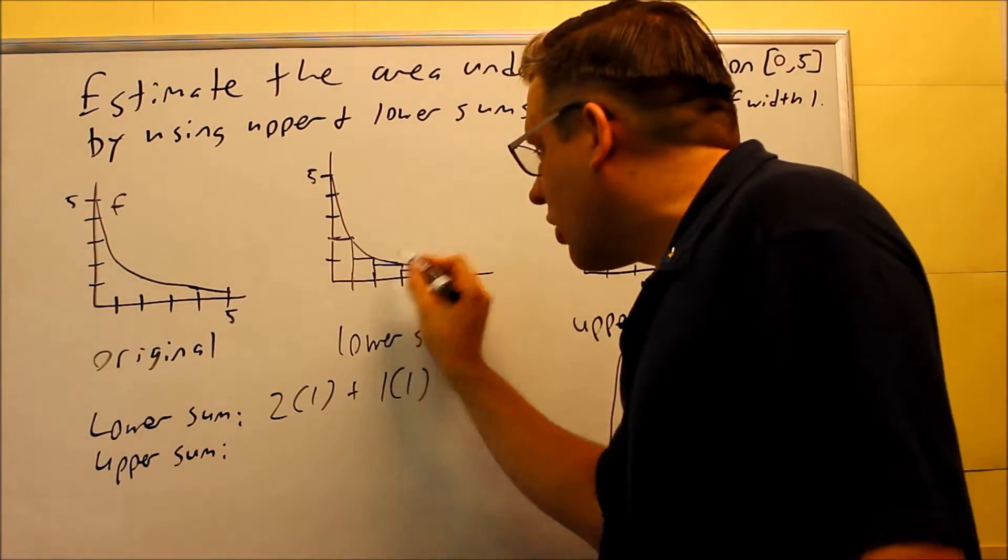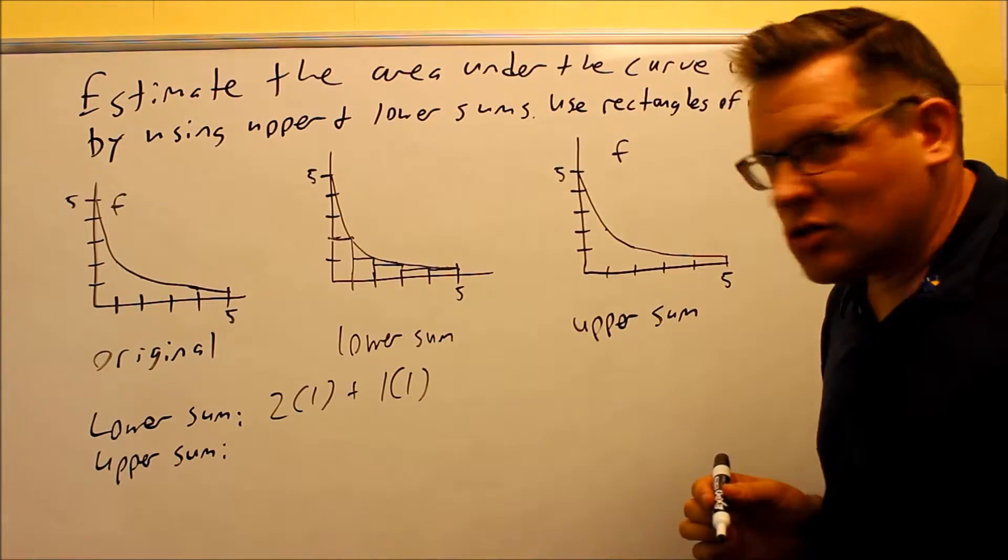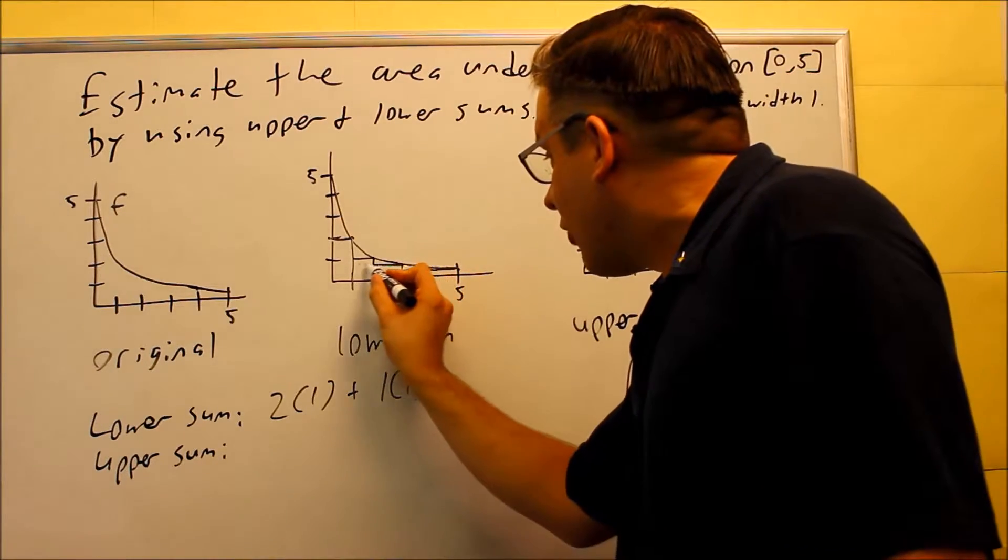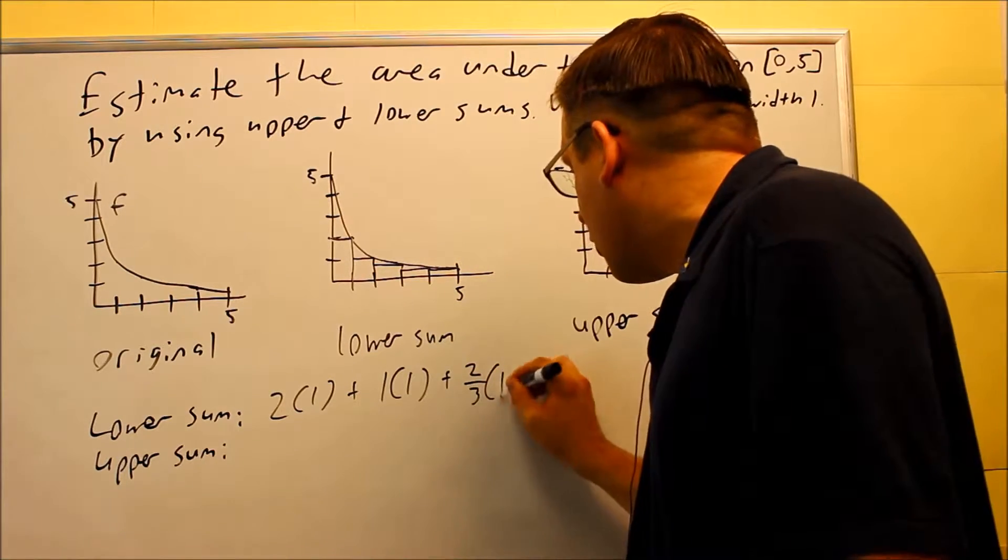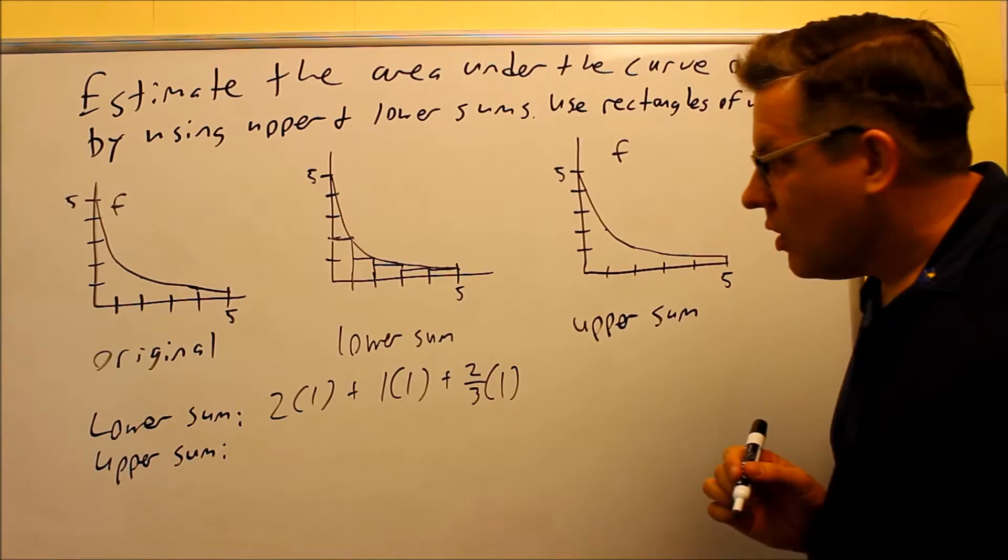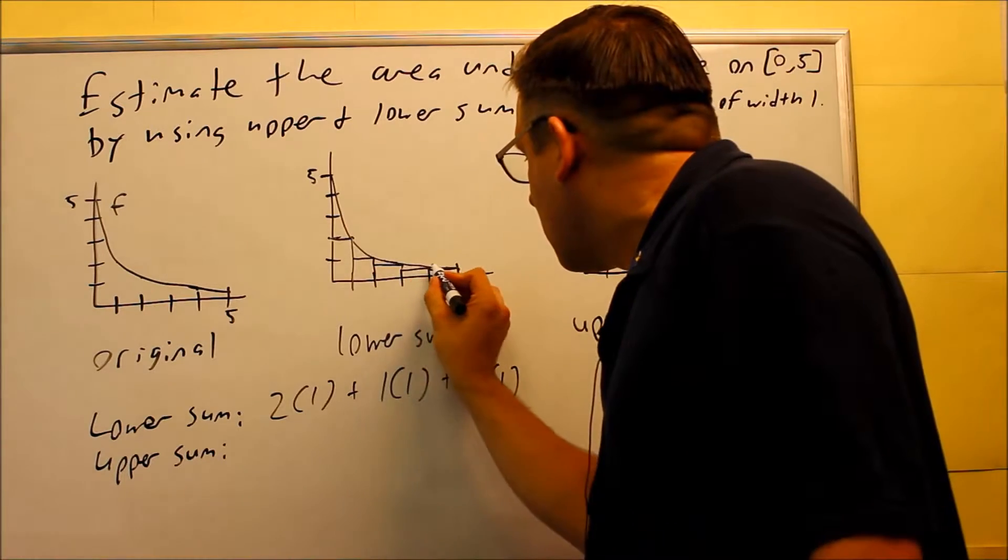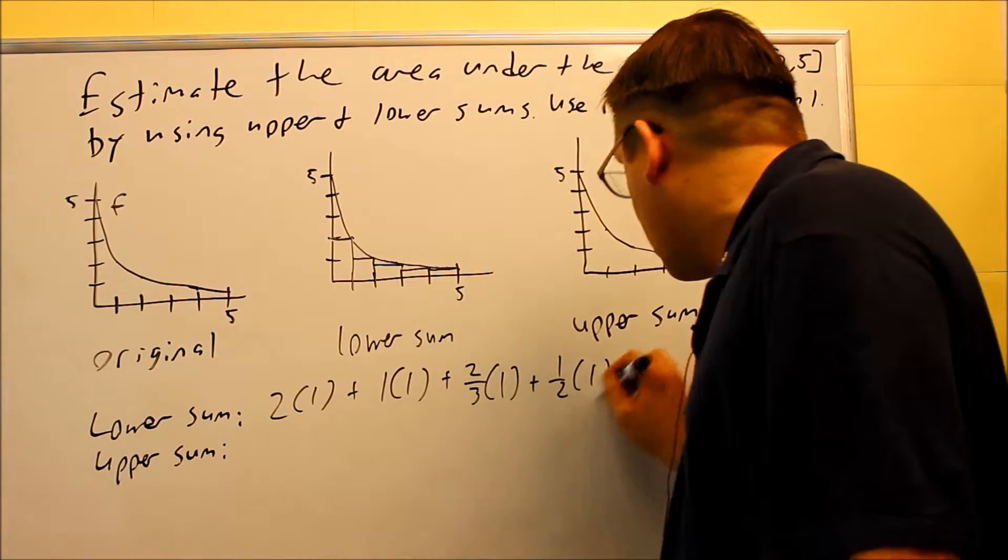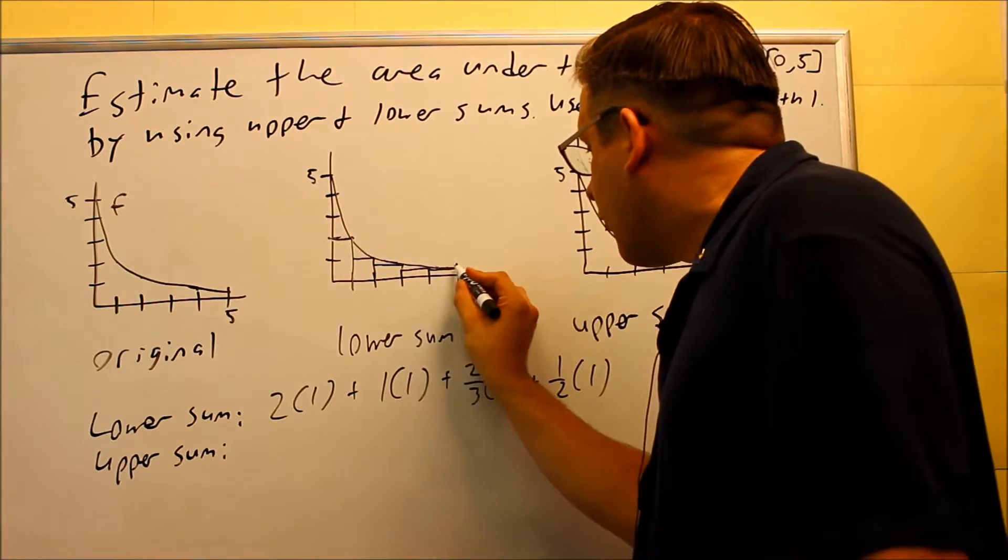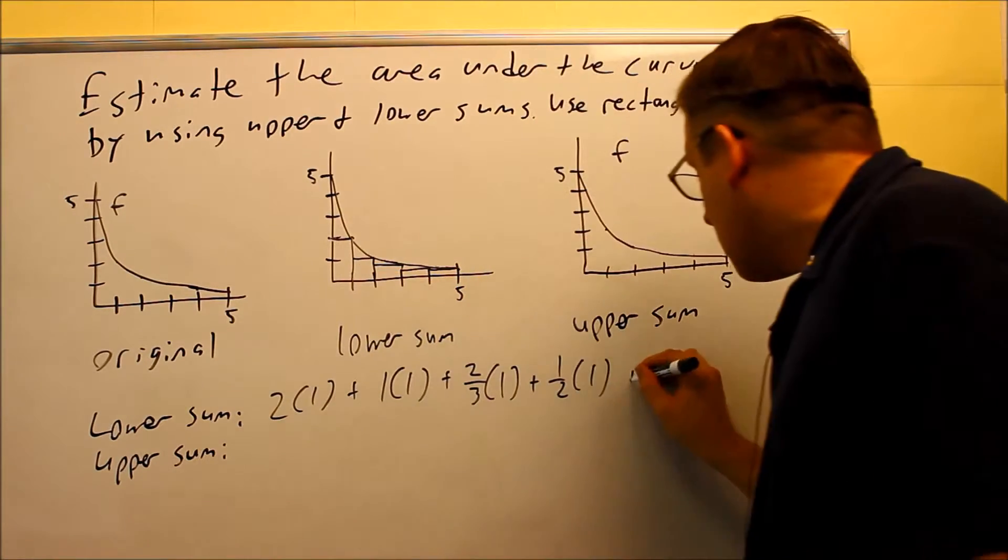Now the next one, this is where we have to start doing a little estimation. I want to find a fractional height, that looks like it's about 2 thirds, so I'm going to do 2/3 times 1. Then next, this one looks like it's about half way, so I'm going to do 1/2 times 1, and then down here finally, that one looks like it's going to be 1/3.